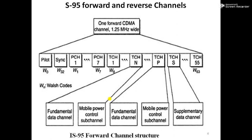The IS-95 forward channel structure consists of four types of logical channels: pilot channel, synchronization channel, paging channel, and forward traffic channel. Each forward carrier channel contains one pilot channel, one synchronization channel, up to seven paging channels, and a number of forward traffic channels. Some traffic channels are designated as fundamental data channels, supplementary data channels, and mobile power control sub-channels. The pilot channel (channel zero) is an unmodulated channel spread by the Walsh-Hadamard code.